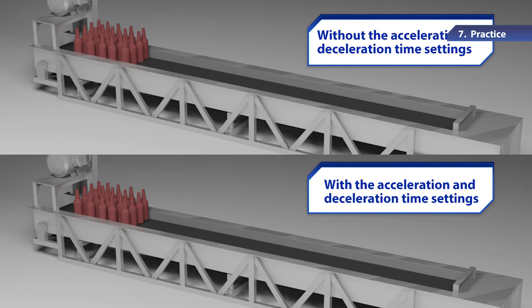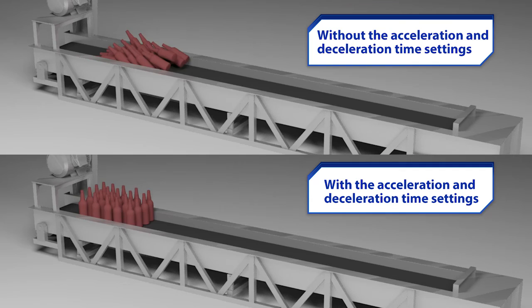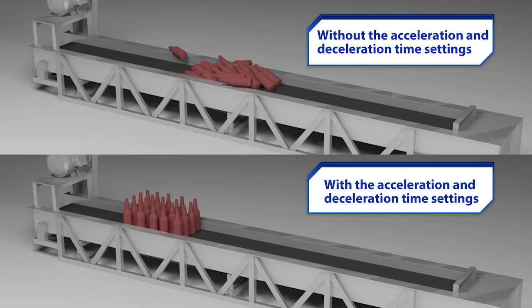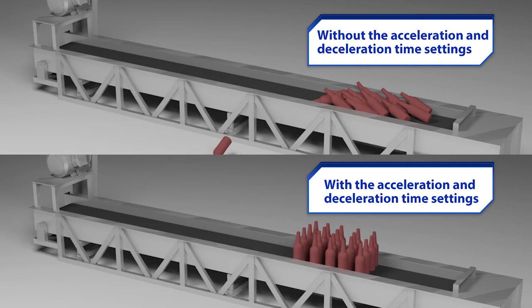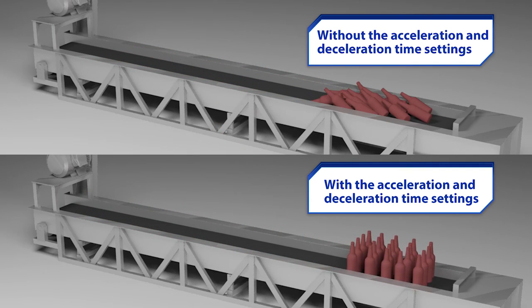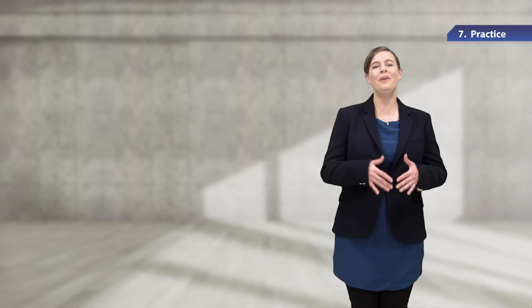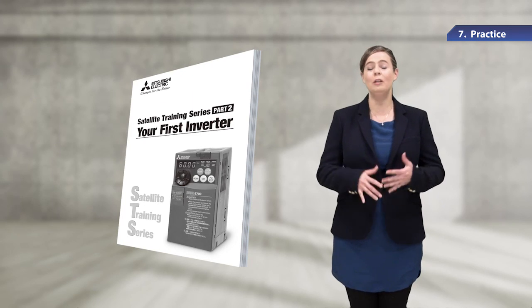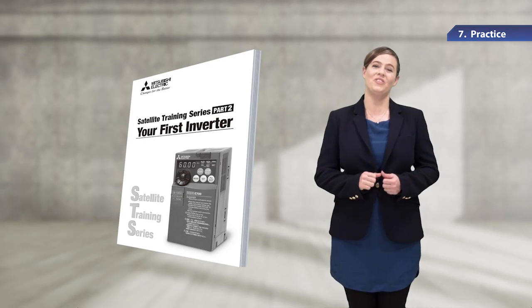Now, let's see how the conveyor operation has been changed. The conveyor with the acceleration and deceleration time set will start slowly and stop slowly. As you see, parameters allow us to set the motor according to the applications of the equipment in which the motor is used. There are many other examples available in the text for your study.